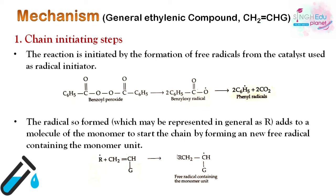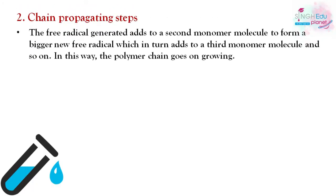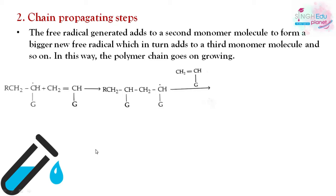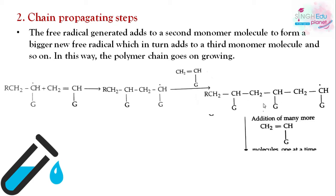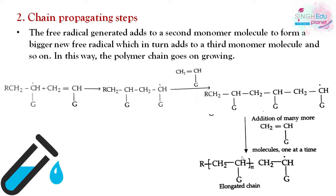The second step is the chain propagation step. The new free radical adds to a second monomer to form a new, larger free radical, which in turn adds to the third monomer, and so the polymer chain grows. We start with a free radical, add a monomer to make a dimer, then add another monomer, then a third, and continue adding many molecules, forming an elongated chain that can be written using the general formula with n repeating units.